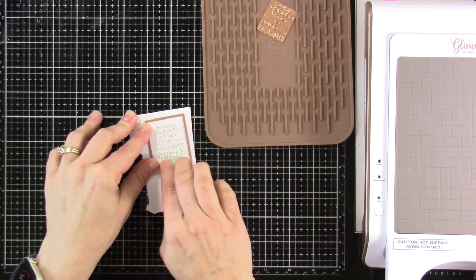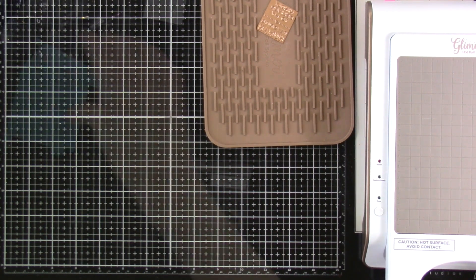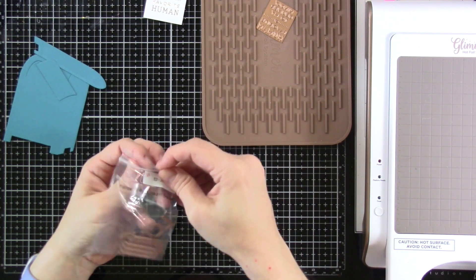And then we can move on to doing some assembly. But when you do tack this down, make sure you don't put any tape over what you've just foiled, because then you could pull that foil up.